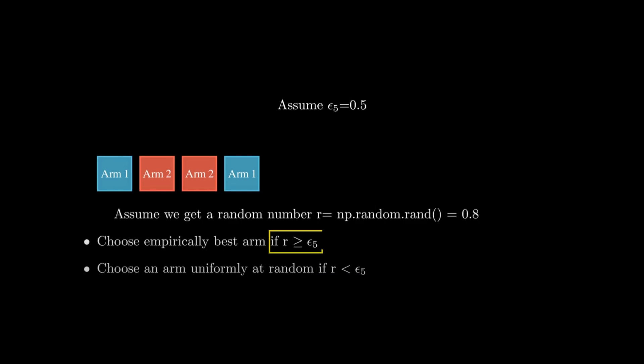We have another experiment. In this time, epsilon was 0.5. So that means that there is a probability of 50% of choosing an empirically best arm. So now, if we did another experiment, we got the random number as somewhere around 0.8. Since in this case, r is greater than epsilon, which is 0.5 and r is 0.8, we choose the empirically best arm.